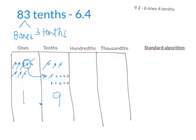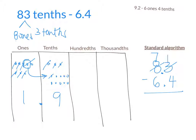Now let me show you what this looks like with the standard algorithm. If I have 83 tenths, I write 8.3 — putting the decimal point so the rightmost place value is in the tenths column, giving eight ones and three tenths. I subtract six ones and four tenths. Three minus four is negative, so I need to regroup: subtract one from the ones to get seven ones, add ten tenths to get thirteen tenths. Thirteen minus four is nine tenths; seven minus six is one. So the answer is 1.9 — exactly what we showed using the pictures.